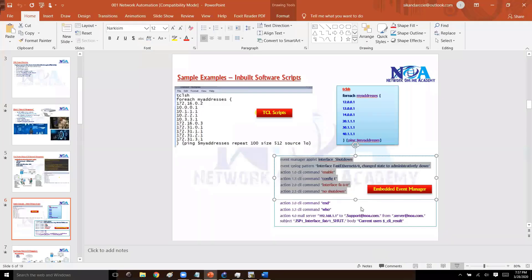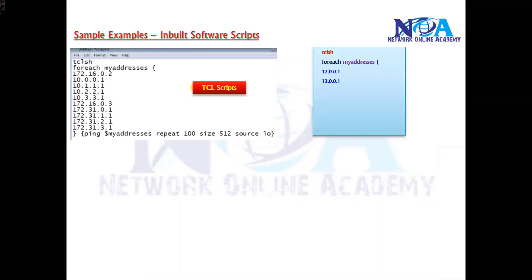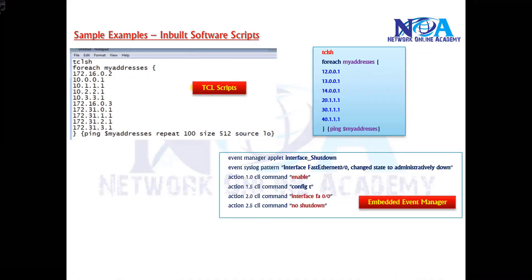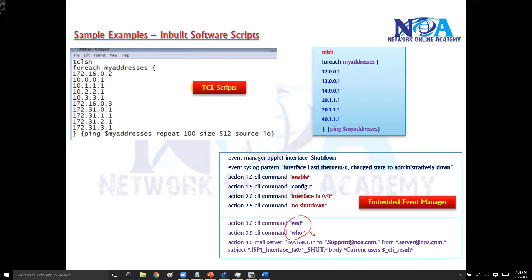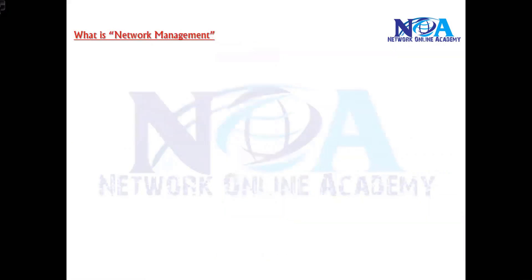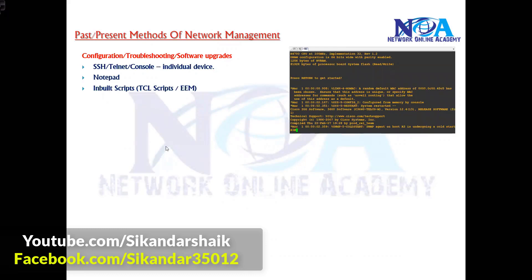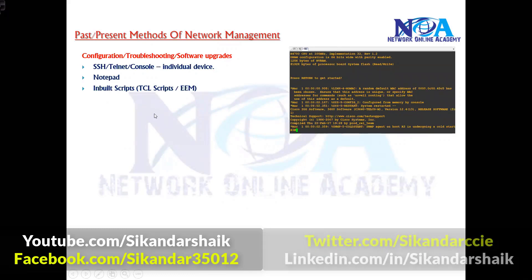This is another example of the inbuilt scripting options found inside the iOS. There are more than 20 plus detectors in EEM. You can also generate an email — identify the user, send an email to a specified email address with a subject and the log message or output — and automate all of these things. So the options covered are: CLI, notepad, TCL scripts, and the Embedded Event Manager feature inside Cisco IOS.